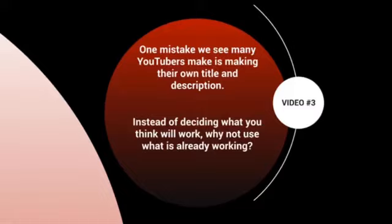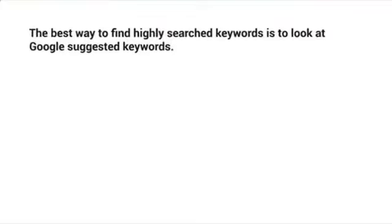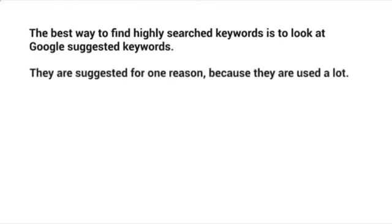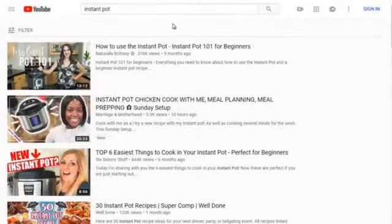The best way to find highly searched keyword terms is to look at Google's and YouTube's suggested keywords — they are suggested for one reason: because they are used a lot. From analyzing the previous top three videos and their titles and descriptions, we want to look at the commonalities between those titles.